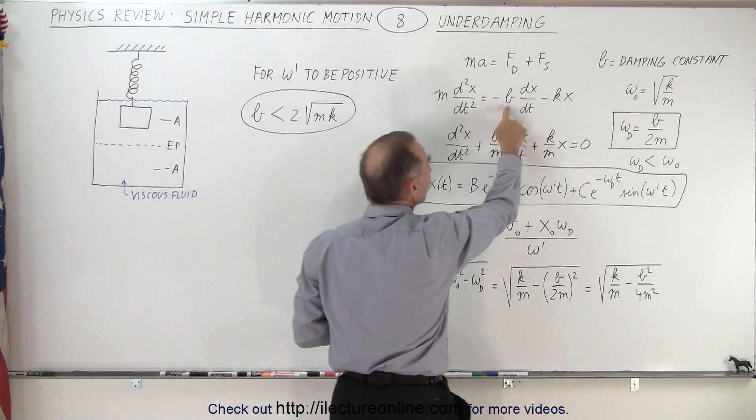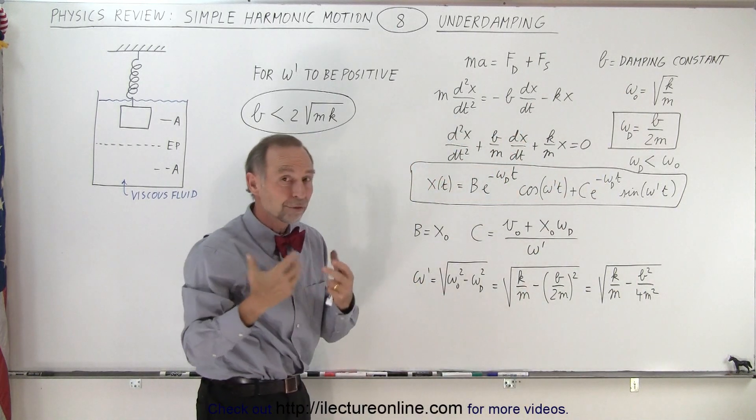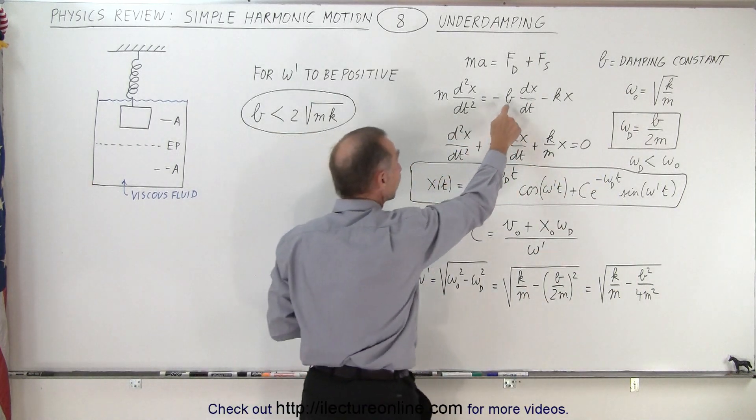Notice that B here is the damping constant. The more the fluid is viscous, the bigger the value for B.